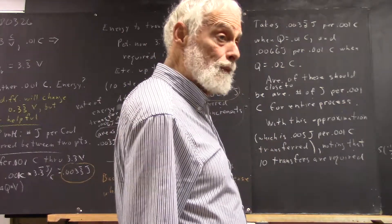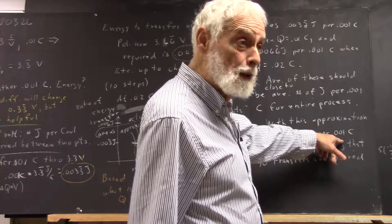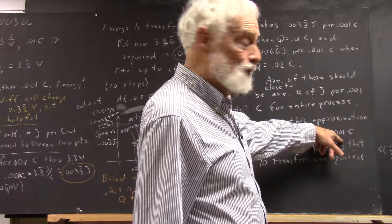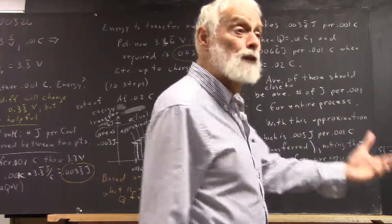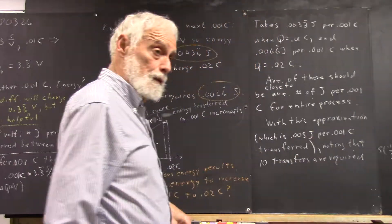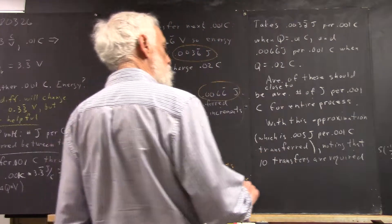Now I want to focus on that. You could say it's joules per 0.001 coulomb, and you're transferring 0.1 coulomb, so you're going to have to have 10 times that many. You could reason it out that way. It would be perfectly valid. I want to focus on the number of transfers. You'll see in a minute. Noting that 10 transfers are required.